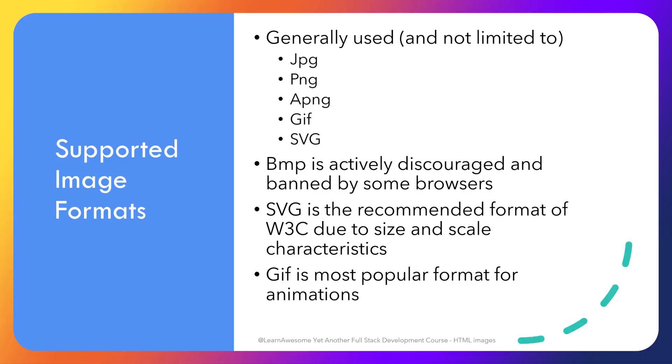Modern browsers offer support for a whole bunch of image formats, including BMP, JPG, GIF, APNG, PNG, and SVG. SVG is recommended by W3C as it is small and can be stretched or shrunk without any distortion. BMP is the worst and some browsers actively deny using it due to its size. GIF is a widely used format to add animations to a web page. The two important factors when choosing an image format are its size and how well it distorts when scaled up or down.